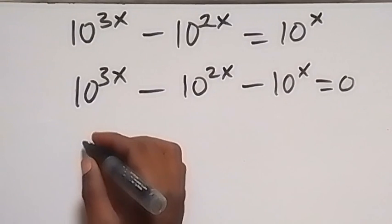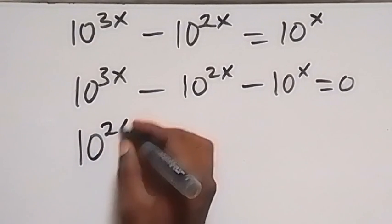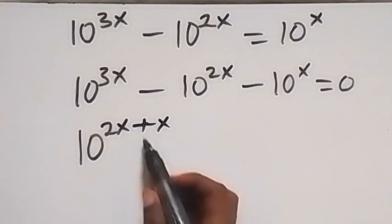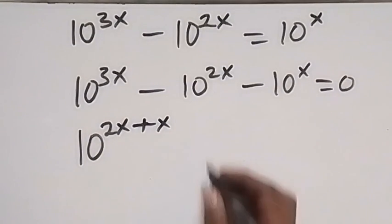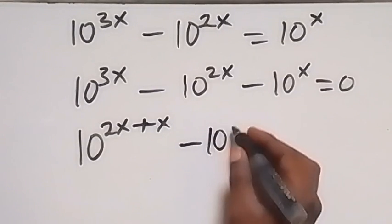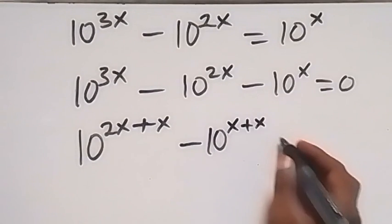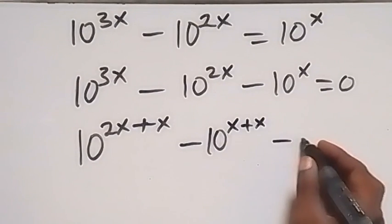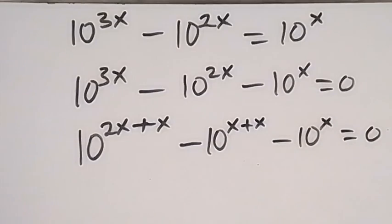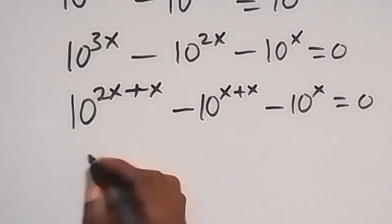10 raised to power 3x will become 10 raised to power 2x plus x — 2x plus x — that will give us 3x. And also from here we have minus 10 raised to power 2x, which can be written as x plus x, then minus 10 raised to power x equals to zero.